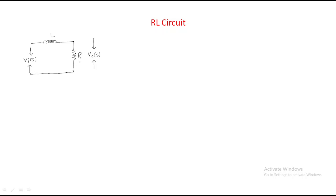In this session we will discuss the RL circuit. I already told you about the RC circuit as a first-order system, so now we will see how the RL circuit acts as a first-order system. Here, this is the input, and L and R are the elements. The voltage across the resistor will be V_out.